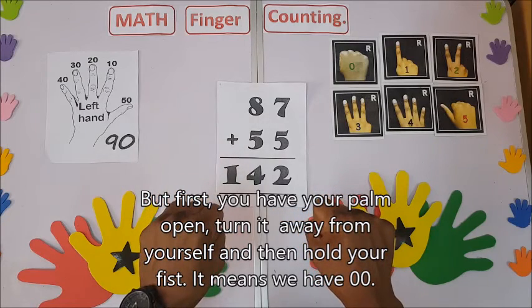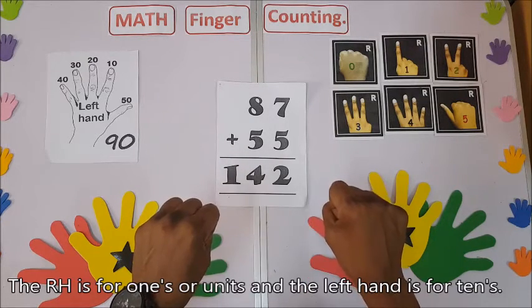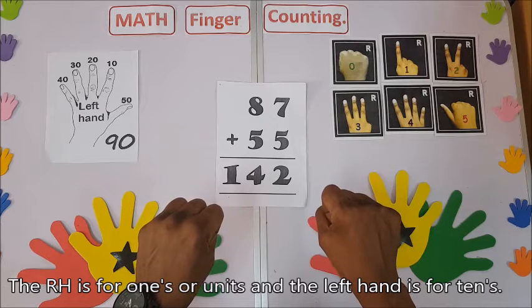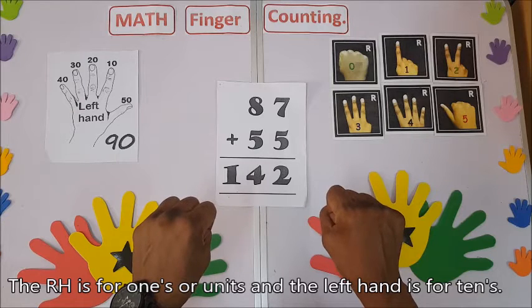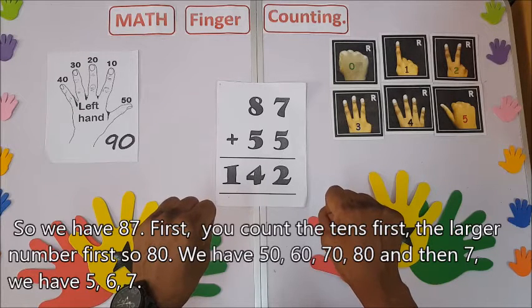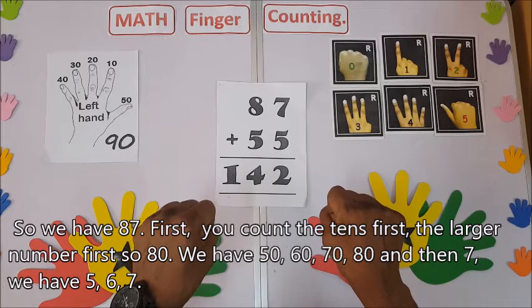The right hand is for ones or units, and then the left hand is for tens. So we have 87. First you count the tens, the larger number first, so 80.